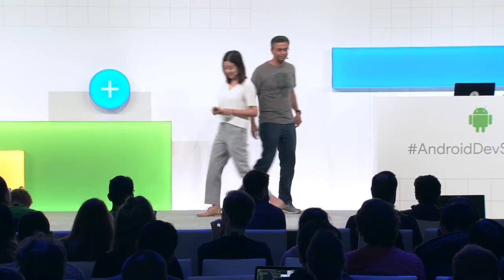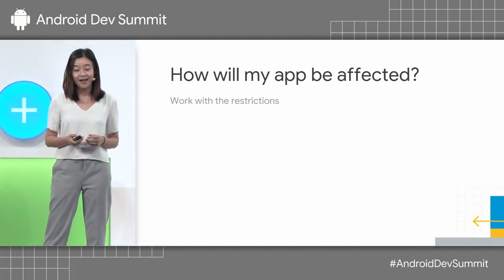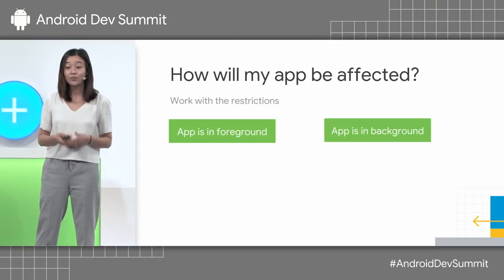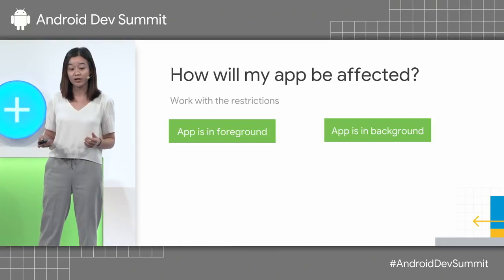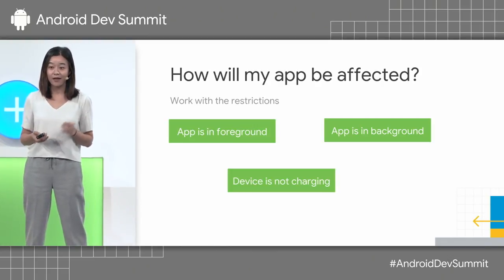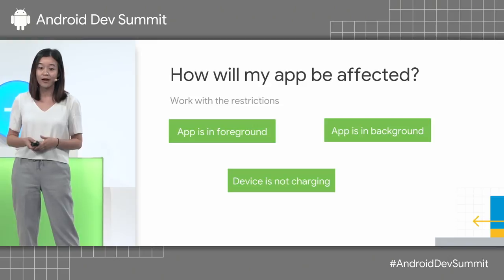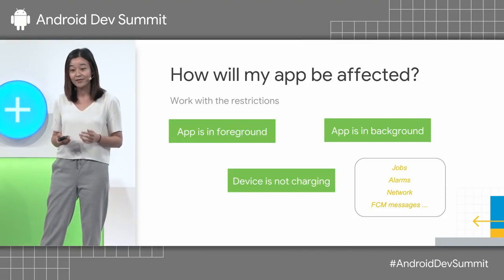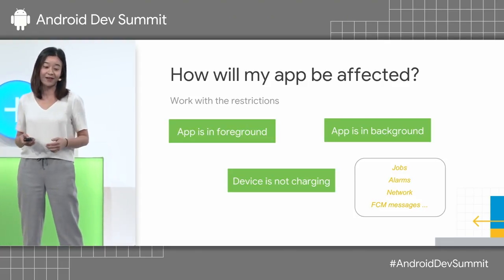Thank you, Amit. So how is your app affected? Any time, your app will be in one of two states: either in the foreground or the background. Whenever your app is considered to be in the foreground, all these restrictions are lifted so you can run whenever you need to. But when your app is in the background and the device is not charging, all of the battery saver features that Amit just talked about could be enabled, which means that your jobs, alarms, network access, and FCM messages could be restricted. And next, we have some diagrams which will show you how they are affected.